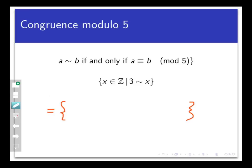Then what is in the set of all x in the integers such that 3 ~ x? Well, what does this even mean? This consists of all the integers that are equivalent to 3. That is, all the integers that are congruent to 3 mod 5.